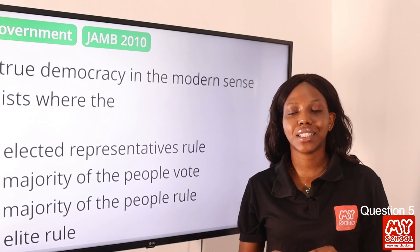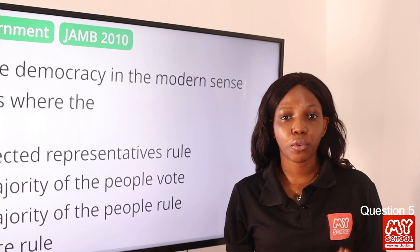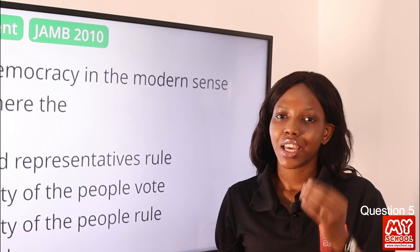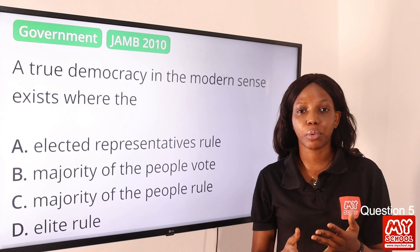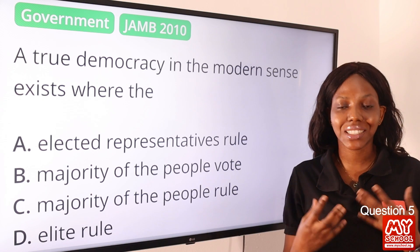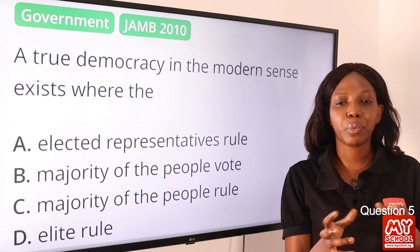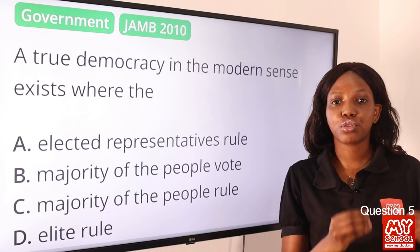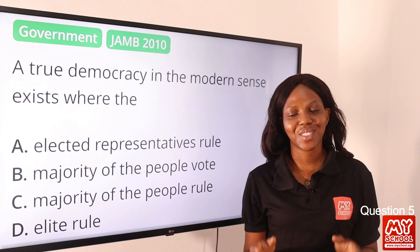Democracy is a system in which the people can exercise their governing powers either directly — by themselves — or through a representative, by electing one. The question asks about the modern sense. There are two types: direct democracy and indirect democracy. In the modern sense, we use indirect democracy, electing our representative. Direct democracy is used in villages or small communities. Indirect democracy through representatives is what is practiced in the modern sense, so option A is the final answer.